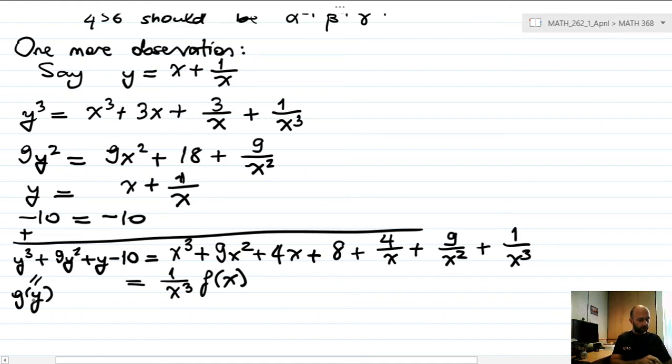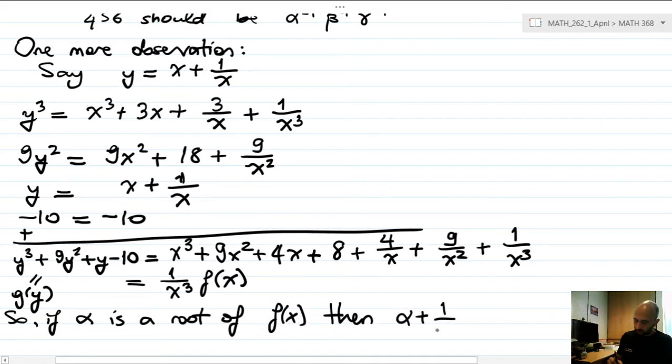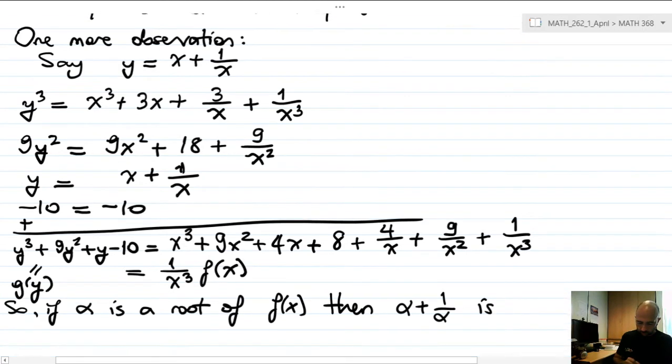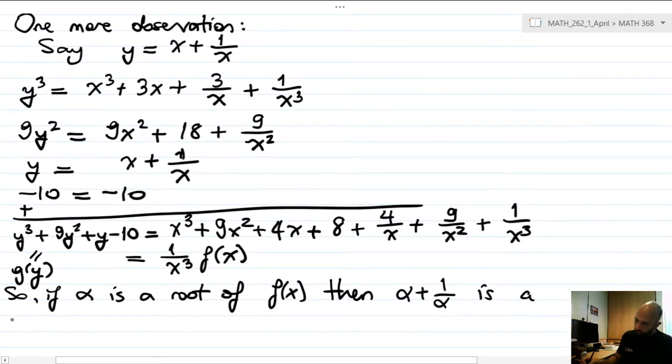Okay, so let me call this cubic g of y. So this relates our palindromic sextic to some other cubic. So let's say if alpha is a root of f(x), then alpha plus 1 over alpha is a root of g(y).